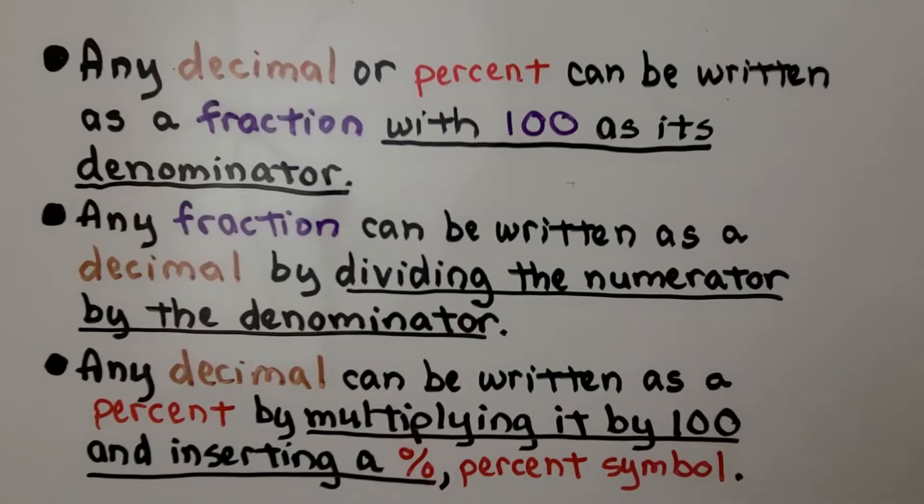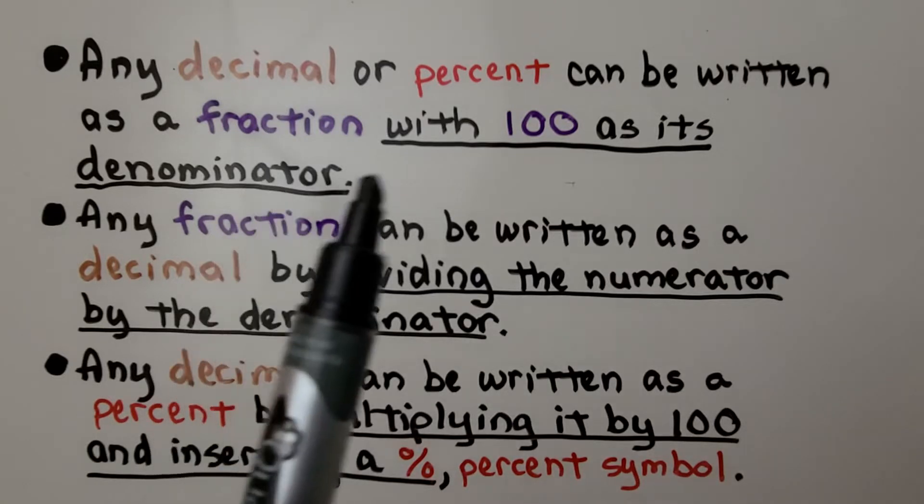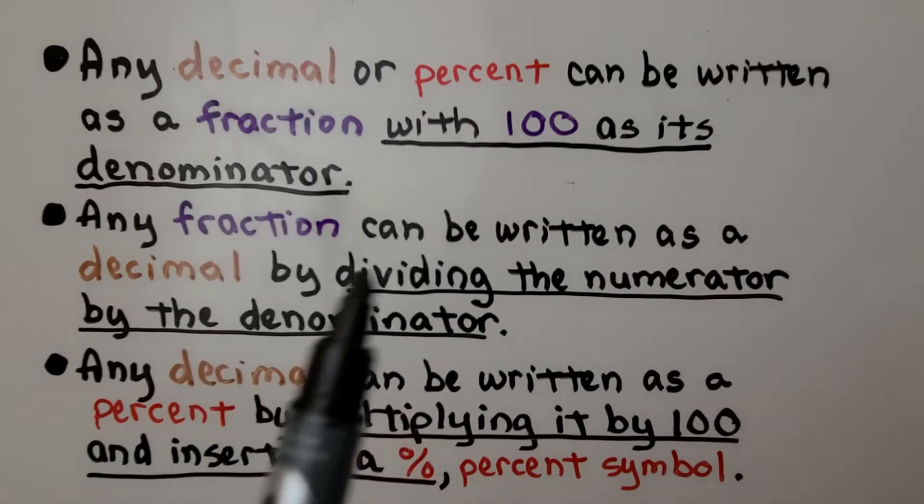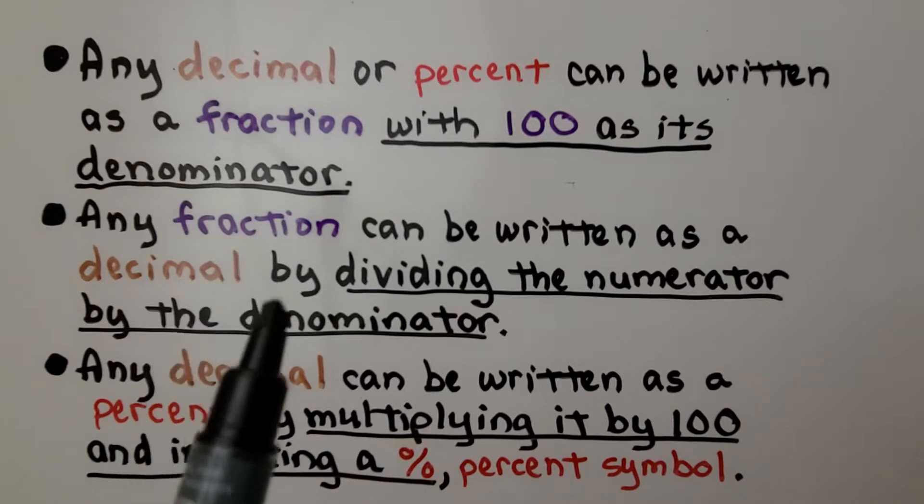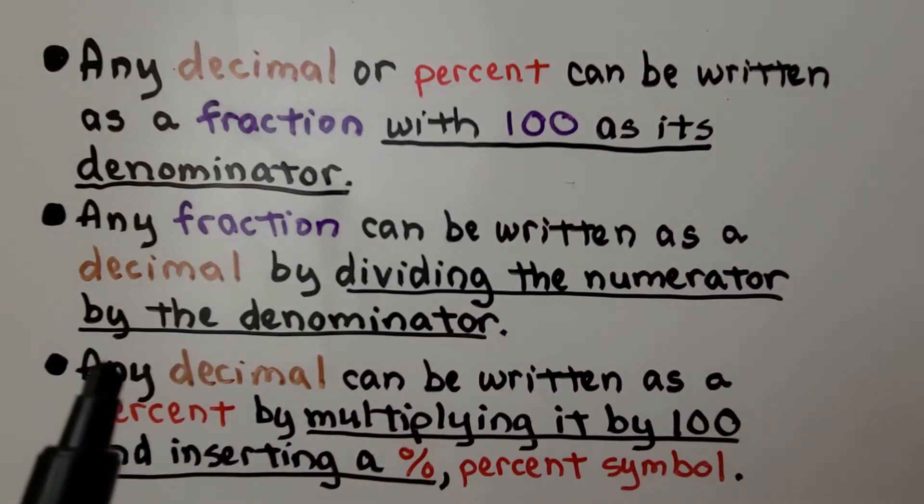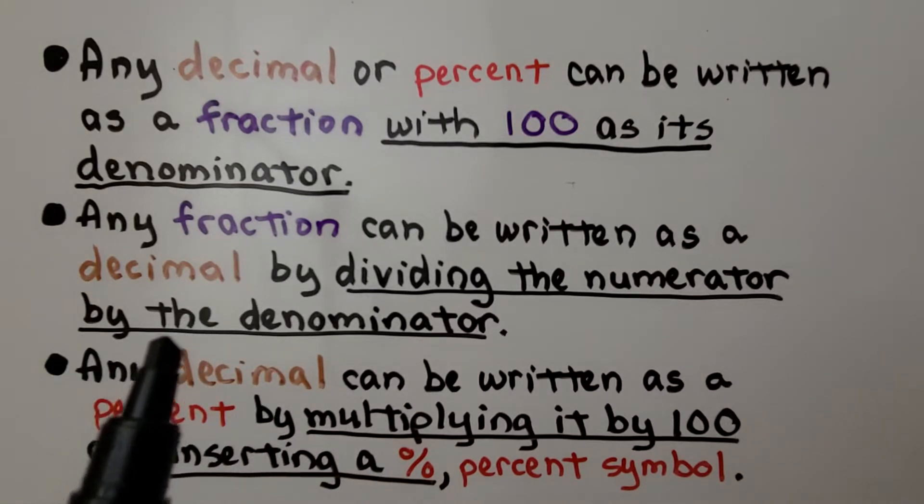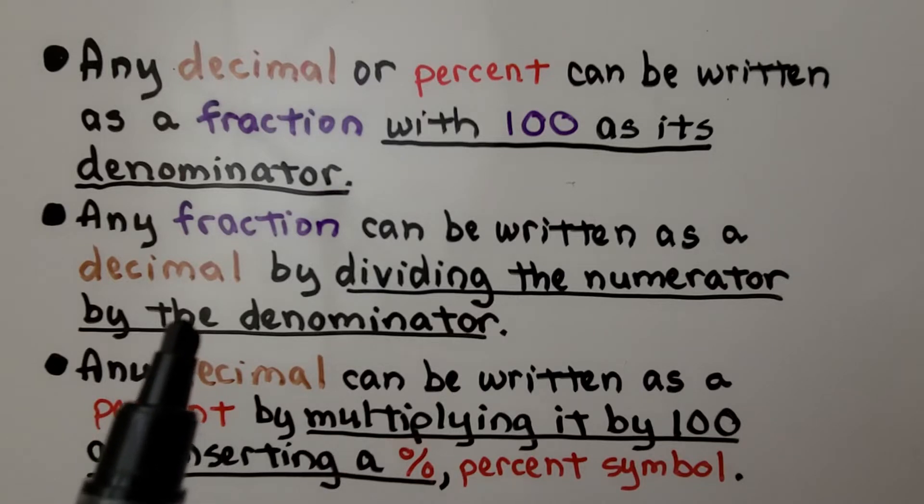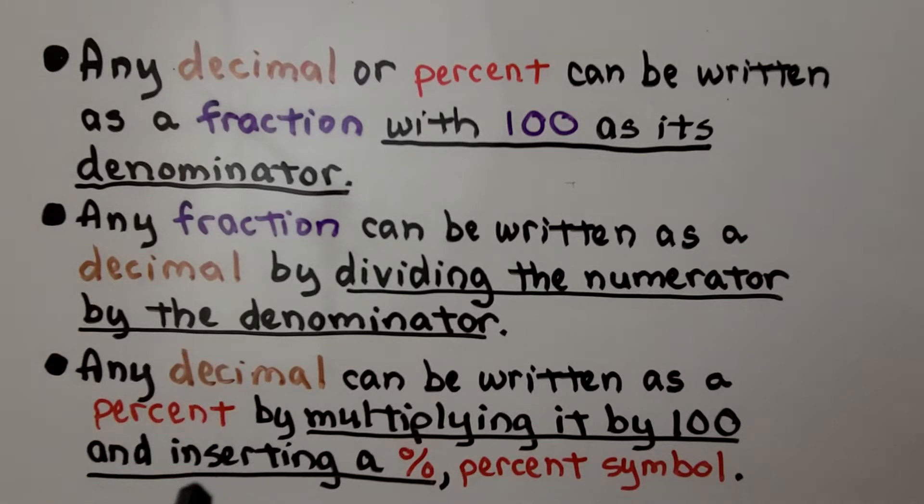Any decimal or percent can be written as a fraction with 100 as its denominator. And any fraction can be written as a decimal by dividing the numerator by the denominator. We'll see how to do that coming up. Any decimal can be written as a percent by multiplying it by 100 and inserting a percent symbol.